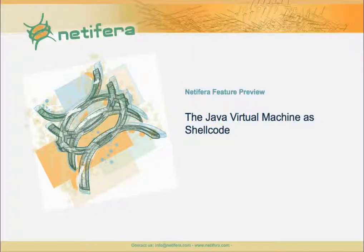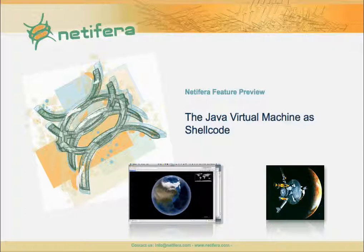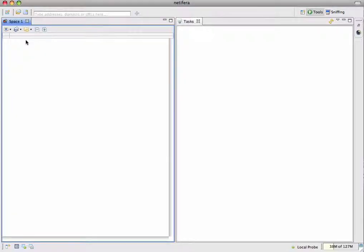In this screencast we're going to look at some features we are working on for the next version of Natifra. The two main things we're going to demonstrate are geographical visualization and the Natifra probe, which is a deployable software agent that makes it possible to run all Natifra platform tools remotely as easily as running them locally. We're going to install the probe on the real natifra.com web server and deploy it like shellcode by injecting it directly into memory over the network using an exploit.